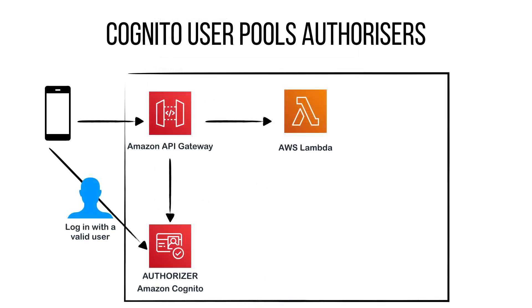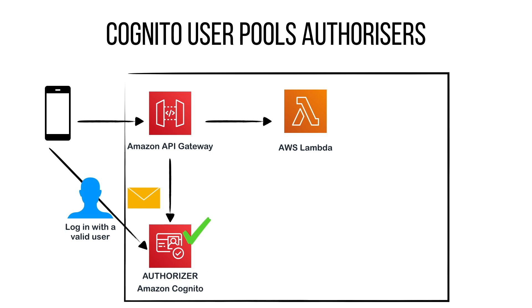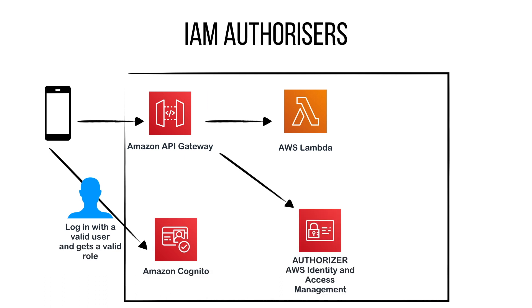Another type of authorizer is Cognito user pools. To use Amazon Cognito user pools with your API Gateway, you first need to create an authorizer of the Cognito user pool type and then configure the method to use this authorizer. You configure a user pool and then put that information into your API Gateway. The flow works like this: when a client wants to use the API, they first sign in to the user pool — Cognito signs in the user and returns a token or identity — and then with that token the client calls API Gateway, which validates the token using the Cognito authorizer and, if valid, proceeds to call the Lambda.